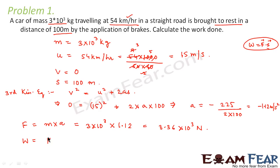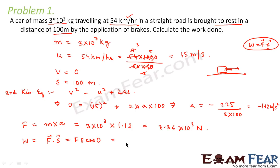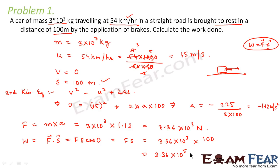Work done = F·S·cos θ. Since the braking force and displacement are both along the same direction, θ = 0°, so cos 0° = 1. Therefore, work done = F × S = 3.36×10³ × 100 = 3.36×10⁵ joules.